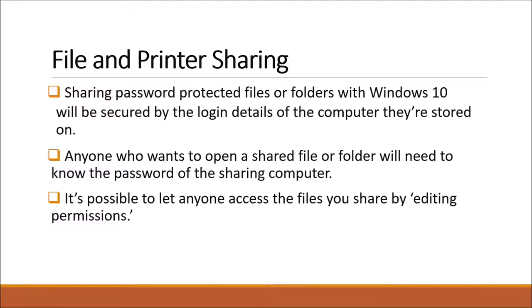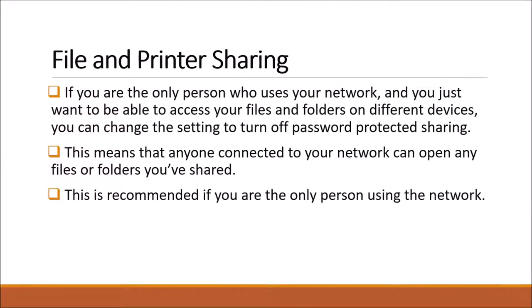Sharing passwords and files with Windows 10 is secured by the logon details of the computer they're stored on. Anyone who wants to open a shared file or folder will need to know that computer's password. It is possible for anyone to access files you share by editing the permissions — just right-click on the file or folder and edit the permissions. If you're the only person using your network and just want to access files on different devices, you can change settings to turn off password-protected sharing, meaning anyone connected to your network can open any shared file or folder.